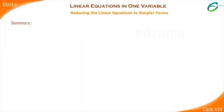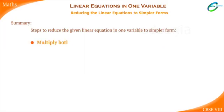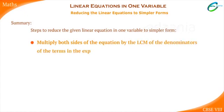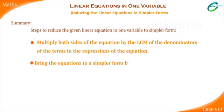Summary. Steps to reduce the given linear equation in one variable to simpler form. Multiply both sides of the equation by the LCM of the denominators of the terms in the expressions of the equation. Bring the equations to a simpler form by opening brackets and combining the equations.